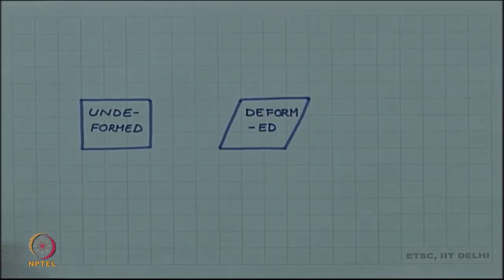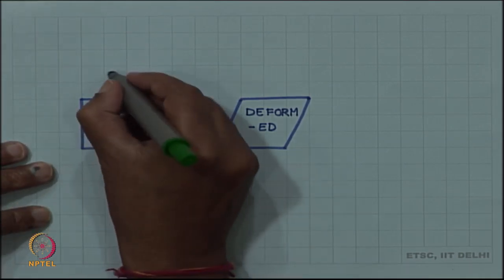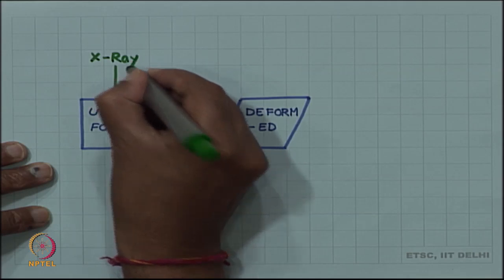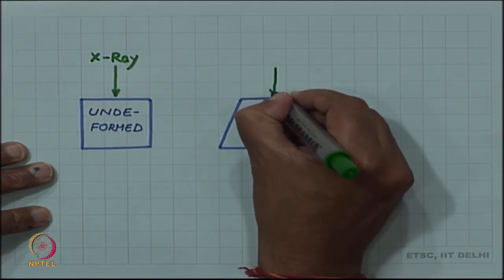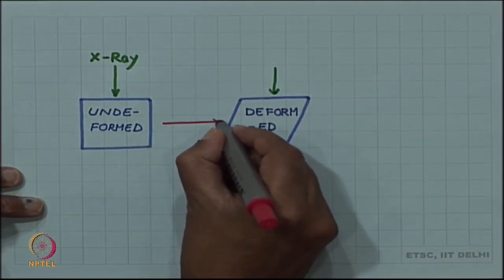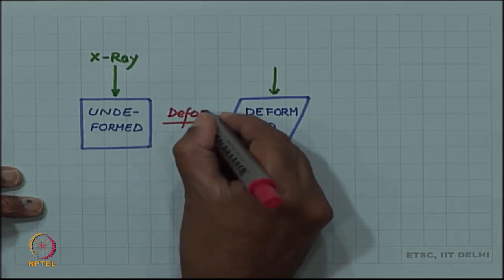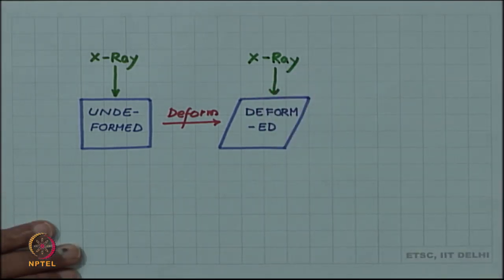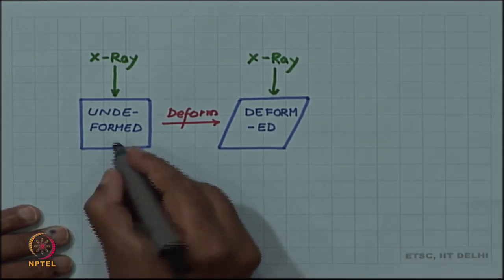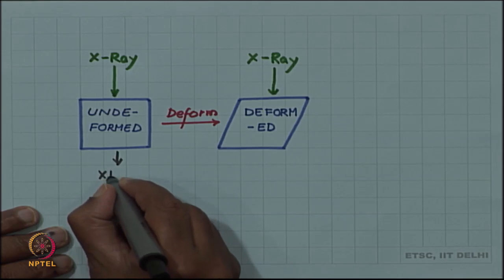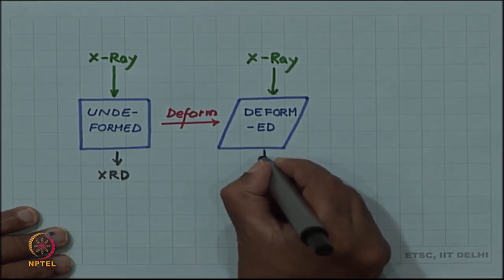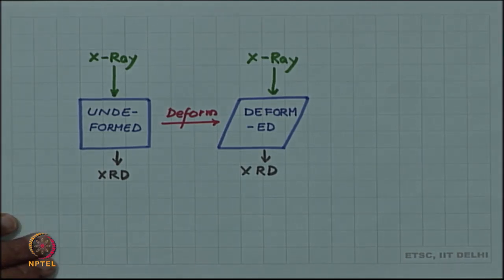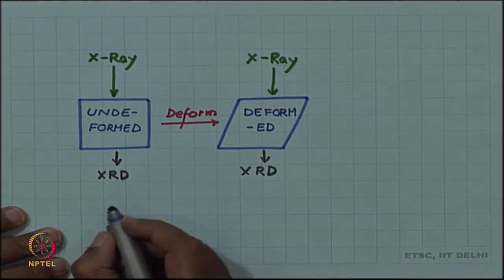Let us subject our undeformed and deformed material both of them to x-ray diffraction. I shine x-ray on undeformed material and I also, then I deform it and I do the experiment again. I shine x-ray on the deformed sample. Both will give me diffraction pattern, x-ray diffraction. And when we analyze the diffraction pattern, we can solve the structure and we can find what has happened to the structure.